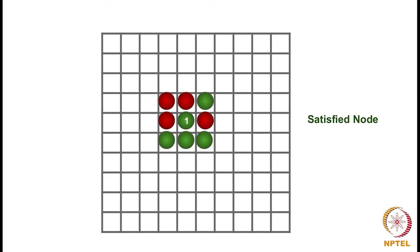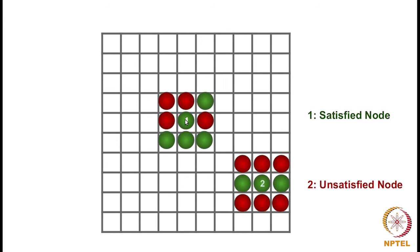As an example, if we set the threshold t to be 3 and look at node 1 — it has 8 neighbors, and out of these 8 neighbors, 4 are of its own type and 4 are of a different type. Since the threshold is 3 and this node has more than 3 neighbors of its own type, we will call this node 1 a satisfied node.